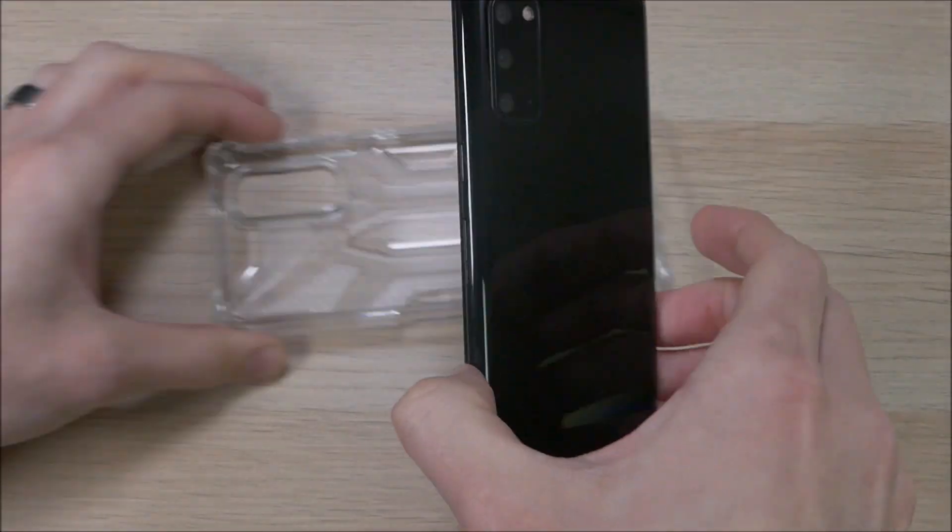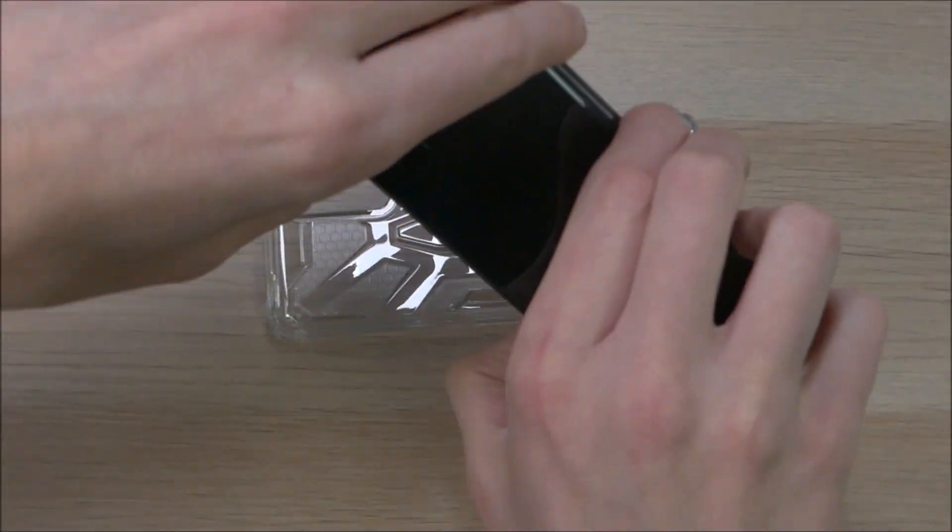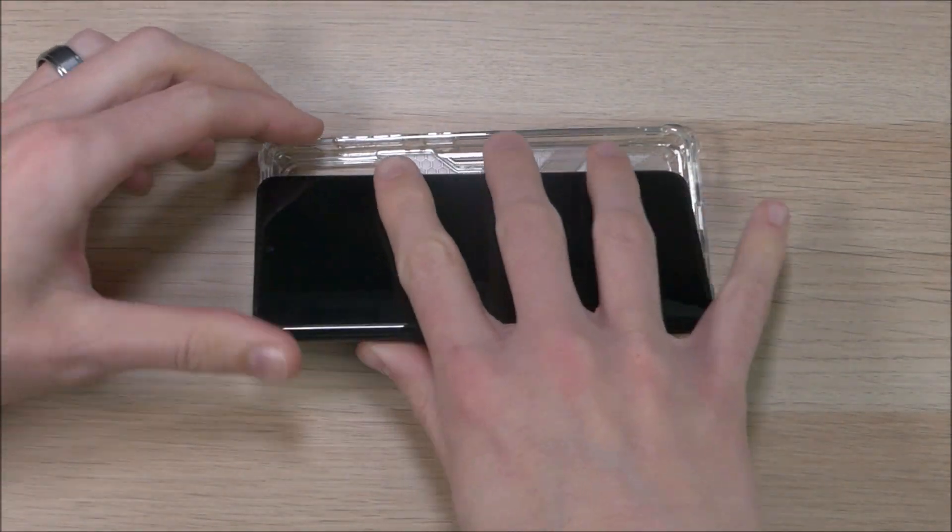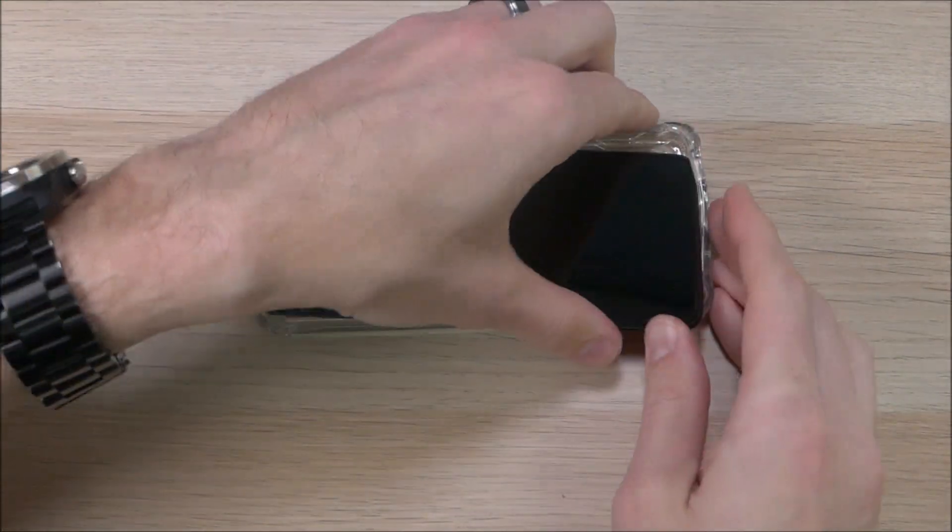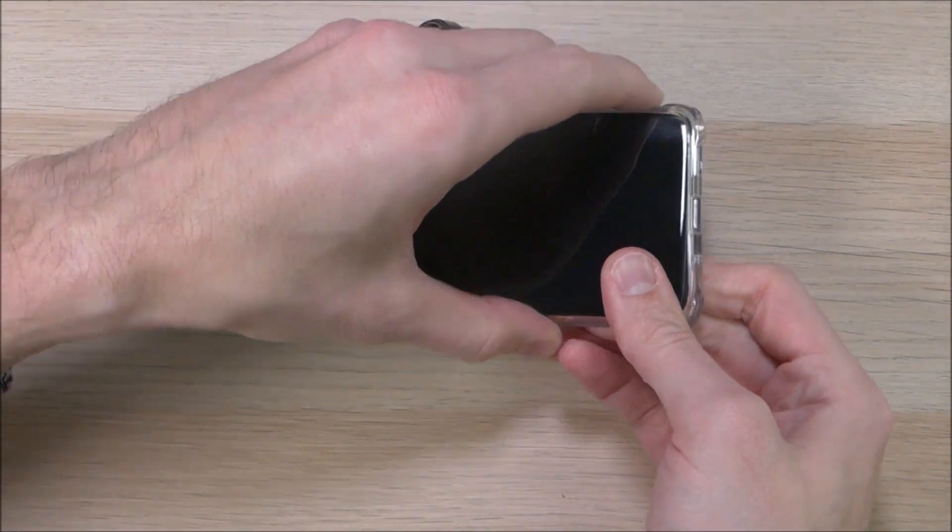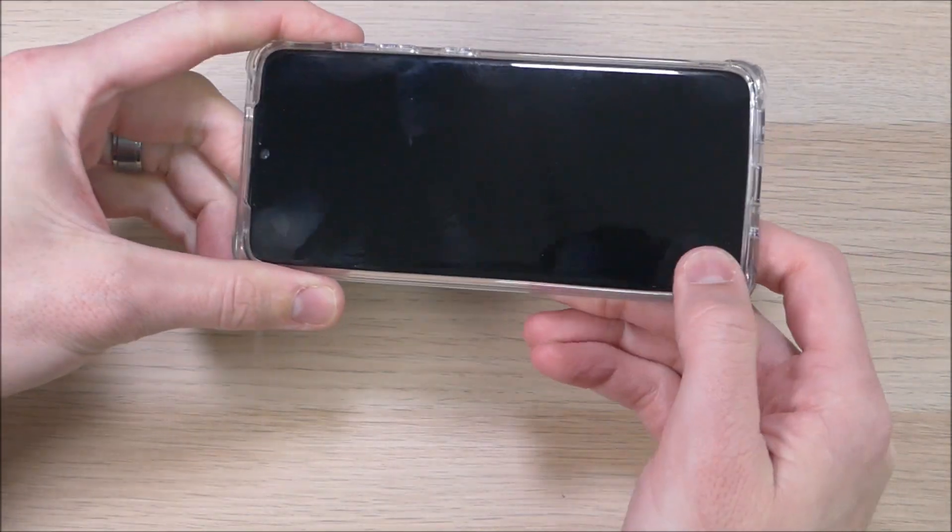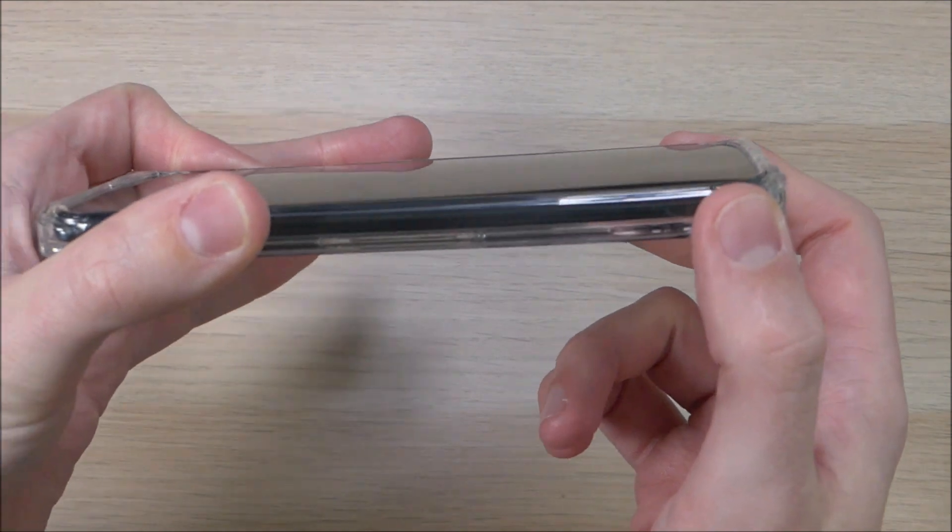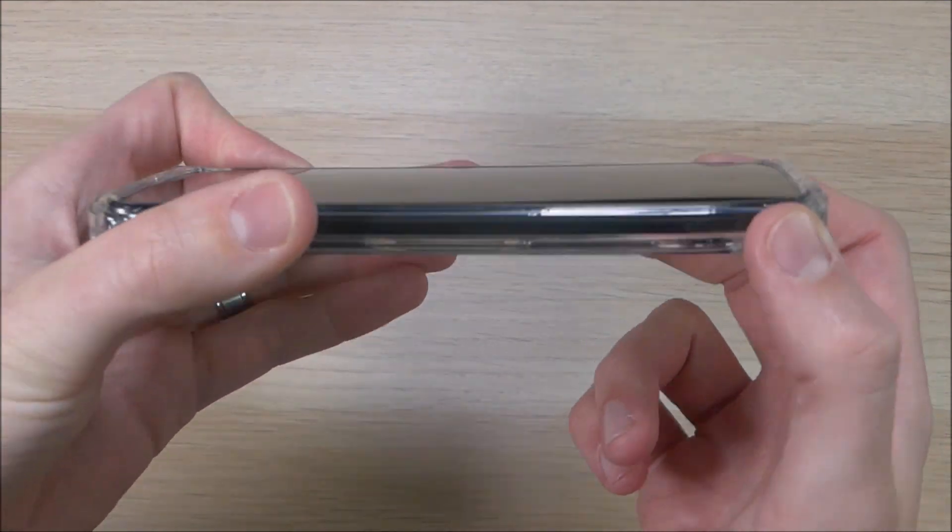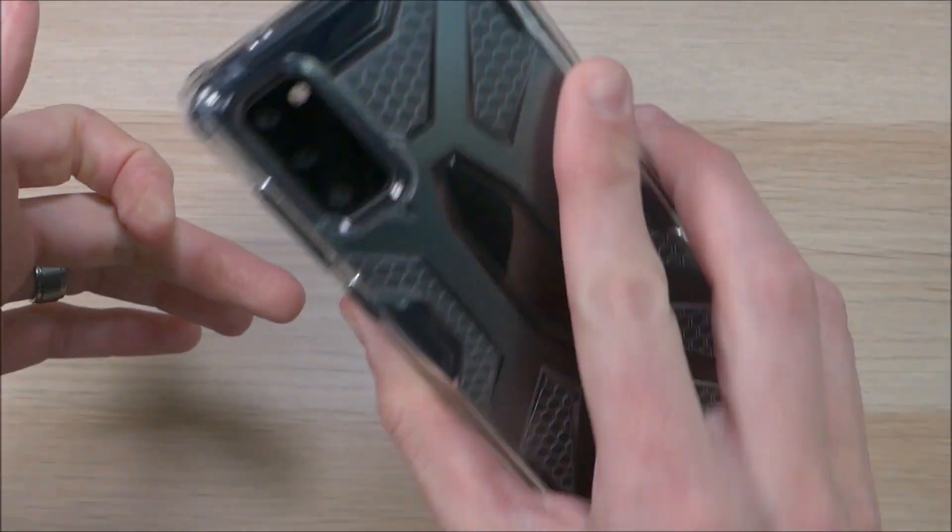Put the case on, we're going to set it down and then we're going to find the power and volume buttons on the S20. We're going to slide those in and we're going to push down in the corners and pop it all the way on. As you can see there, it's a very snug fit. It might be a little bit difficult to get it on the case, but the good news is once it's on, it's not going to be coming off.